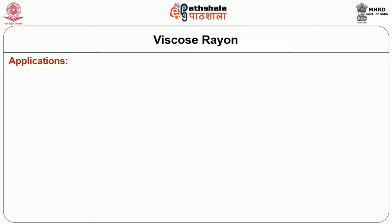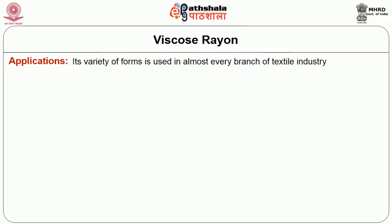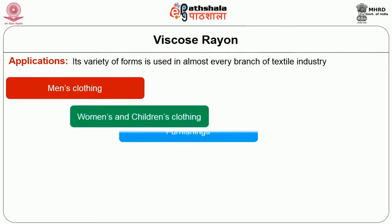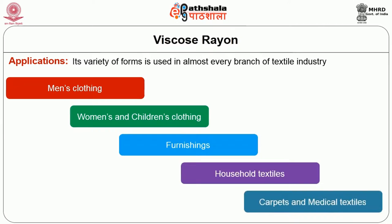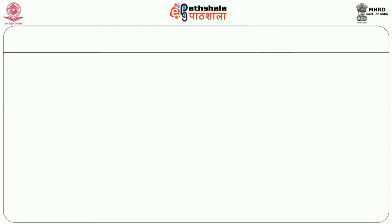Some of the applications of Viscose Rayon. Viscose Rayon in its variety of forms is used in almost every branch of the textile industry. It is used in men's wear, women's wear, children's wear clothing. It is used in furnishings, household textiles, carpet industries, and medical textiles.